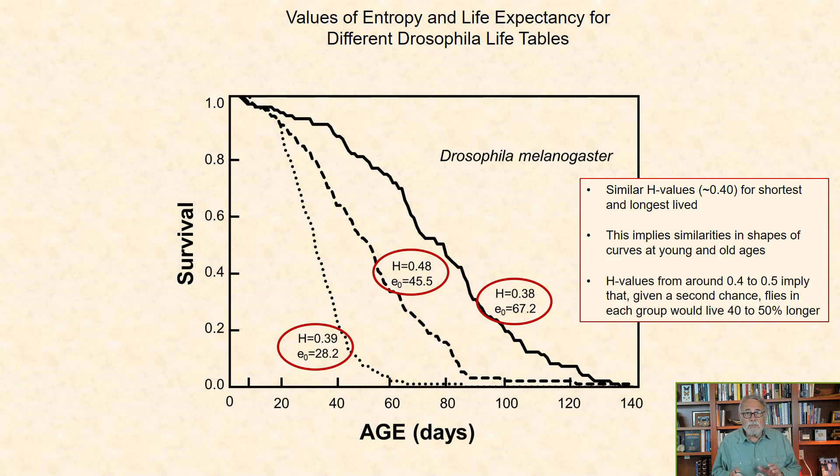Second, H values from around 0.4 to 0.5 imply that given a second chance, flies in each of these three groups would live 40% to 50% longer.